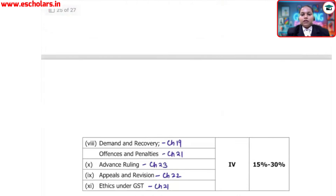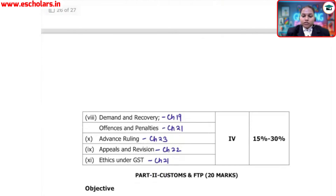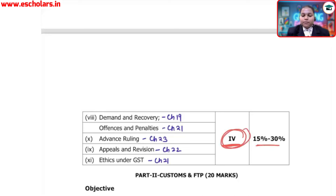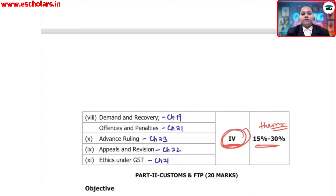The last GST section is Section number 4, which carries 15% to 30% weightage. This is generally the theory portion. Topics include Demand and Recovery, Offenses and Penalties, Advance Ruling, Appeal and Revision, and Ethics under GST.